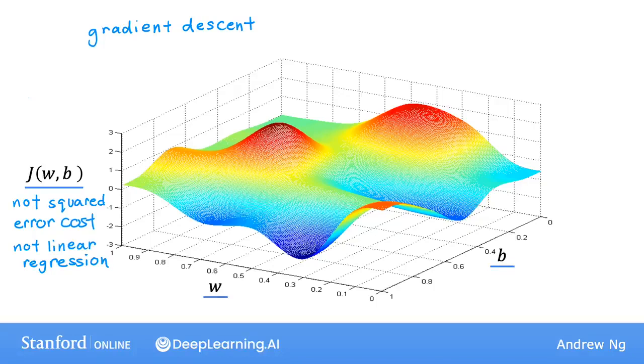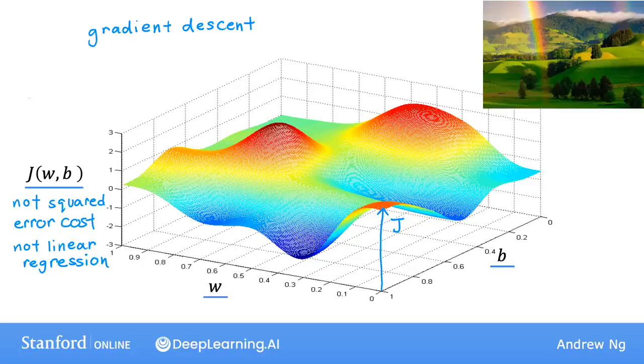The axis, that is w and b on the bottom axis. For different values of w and b, you get different points on this surface J(w,b), where the height of the surface at some point is the value of the cost function. Now, let's imagine that this surface plot is actually a view of a slightly hilly outdoor park or a golf course.